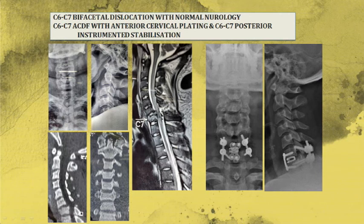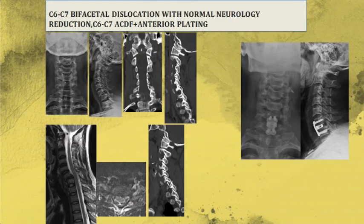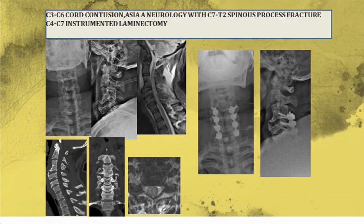Another cervical case shows fracture dislocation at C6-C7 level, with loss of continuity visible on imaging. It was stabilized using both anterior and posterior surgery — anteriorly by means of plate and cage, and posteriorly as well.